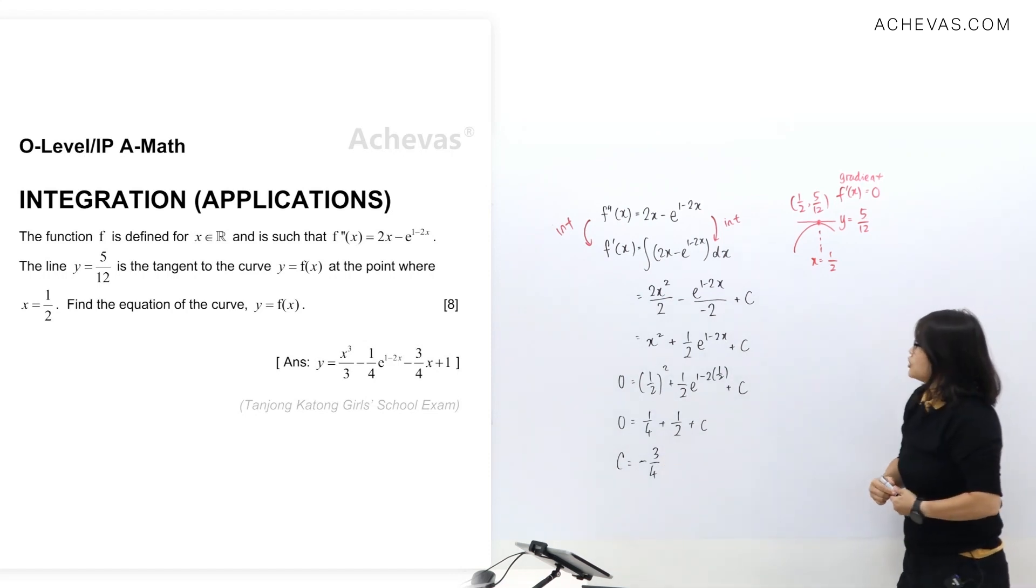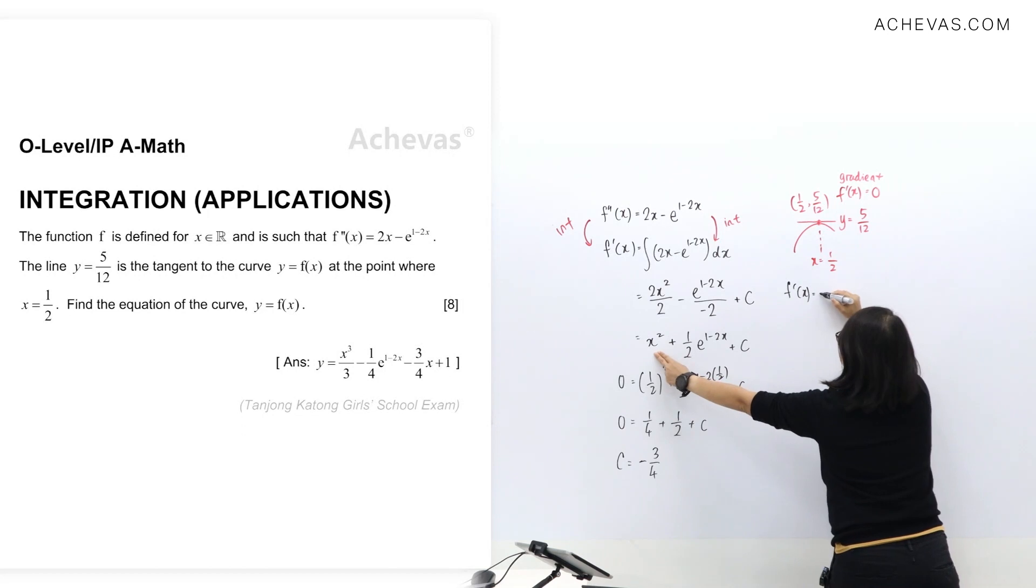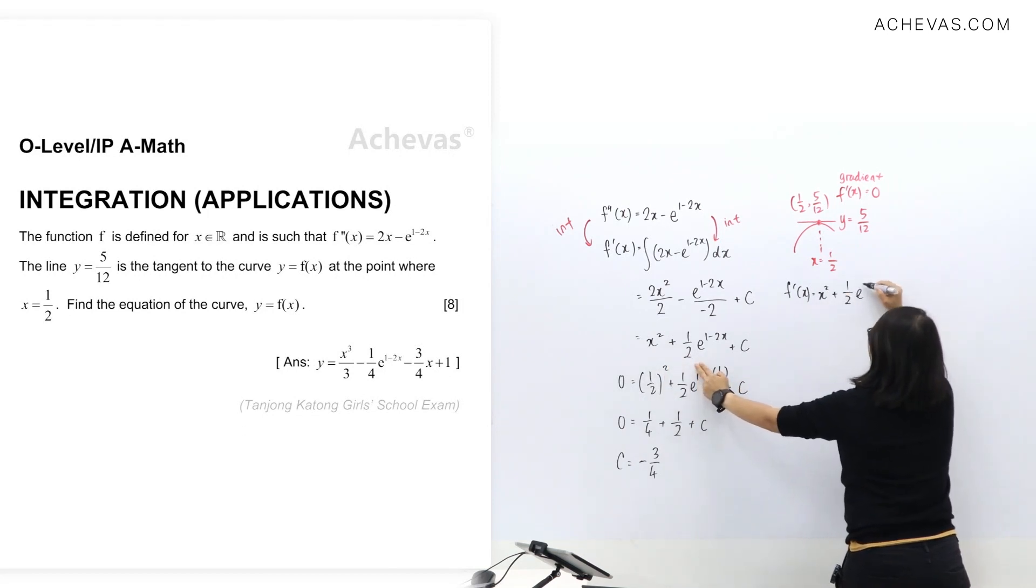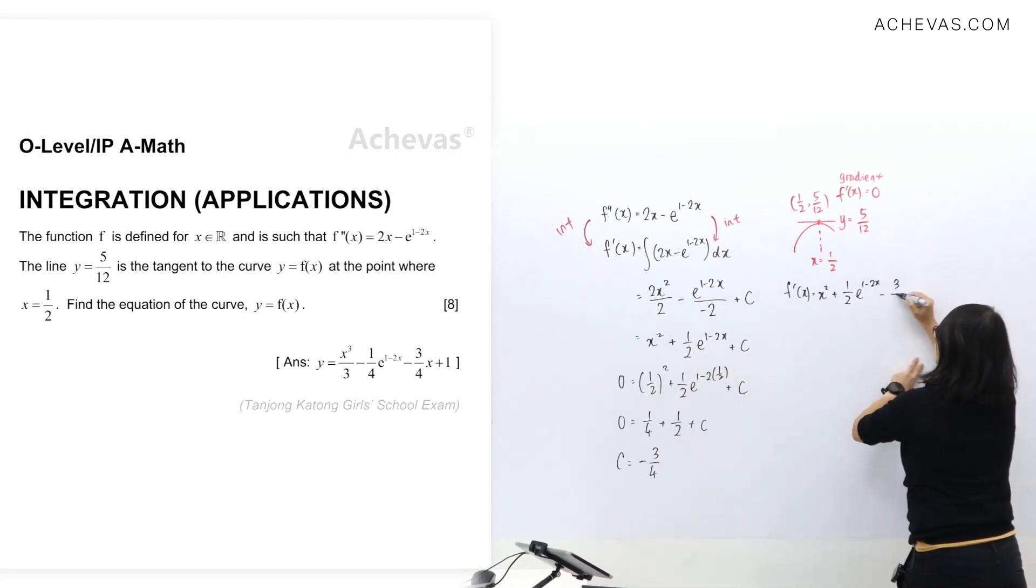Let me continue. We're going to replace c over here and write down f'(x) now equals to x² + (1/2)e^(1-2x) - 3/4.